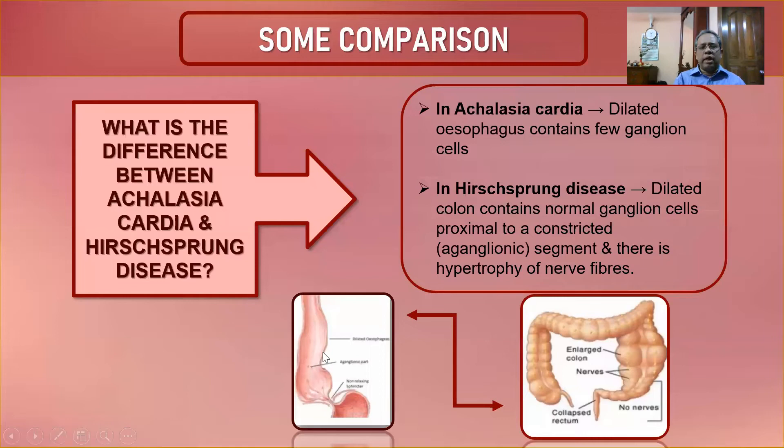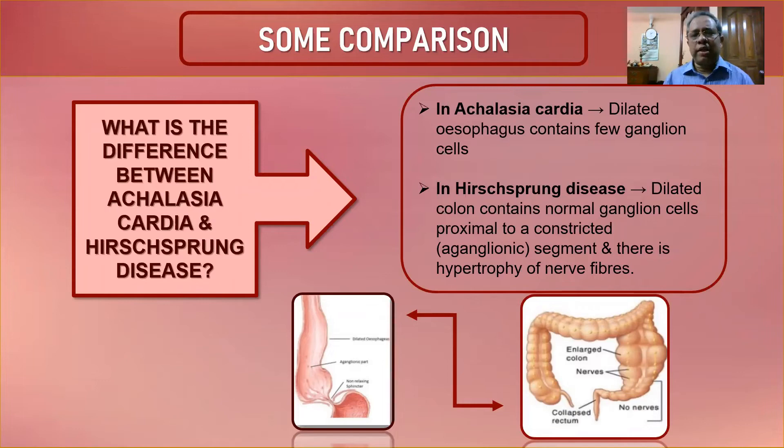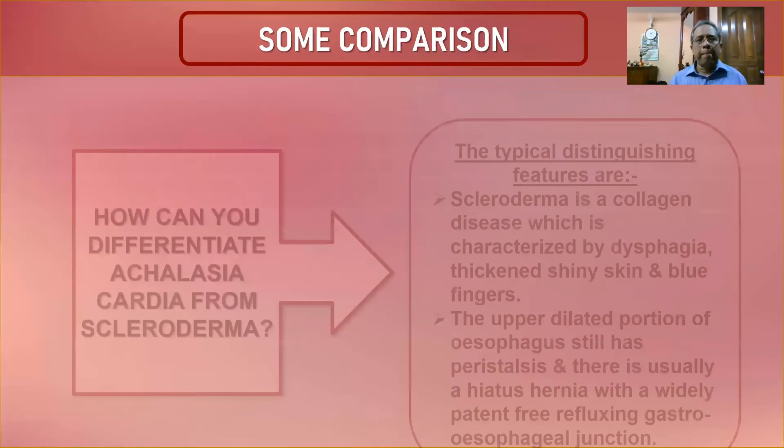In achalasia cardia, the dilated affected segment of the esophagus is aganglionic. In Hirschsprung's disease, the constricted lower segment is aganglionic. For easy memorization: esophagus is upper — upper part is aganglionic; rectum is lower — lower part is aganglionic.